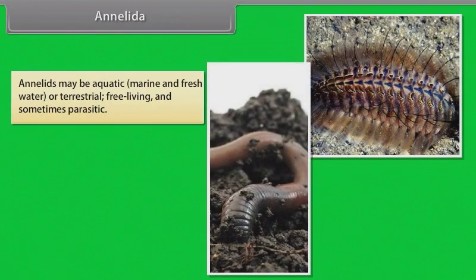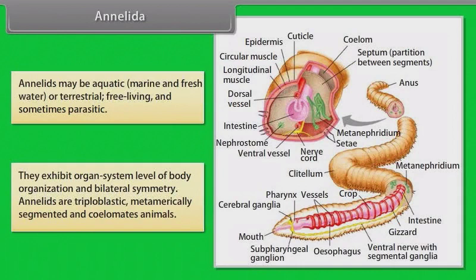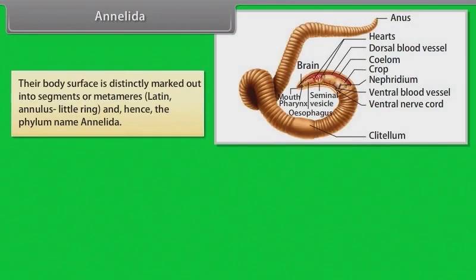Annelids may be aquatic, that is marine and freshwater, or terrestrial, free-living and sometimes parasitic. They exhibit organ system level of body organization and bilateral symmetry. Annelids are triploblastic, metamerically segmented and coelomate animals. Their body surface is distinctly marked out into segments or metameres — a Latin word meaning 'annulus,' little ring — and hence the phylum name Annelida.